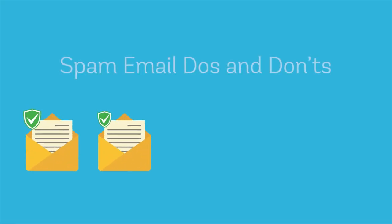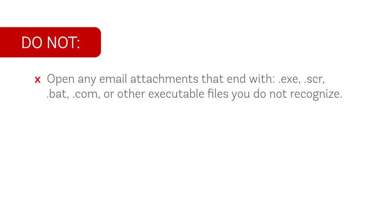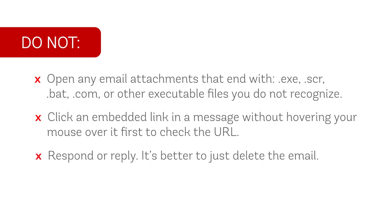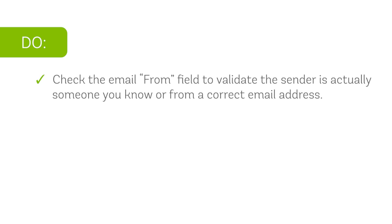Here are some do's and don'ts when it comes to suspicious emails. Do not open any email attachments that end with EXE, SER, BAT, COM, or other executable files that you do not recognize. Do not click an embedded link in a message without hovering your mouse over it first to check the URL. Do not respond or reply — it's better to just delete the email. Do not unsubscribe — it's better to delete the email than to deal with the security risk of clicking the unsubscribe button. Do check the email from field to validate the sender is actually someone you know or from a correct email address.